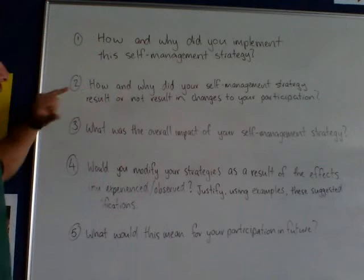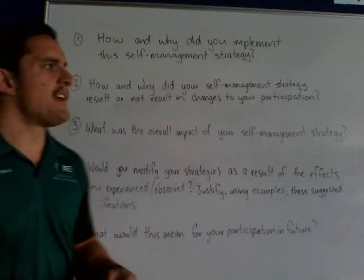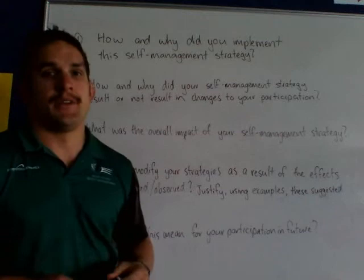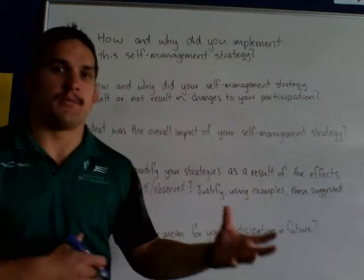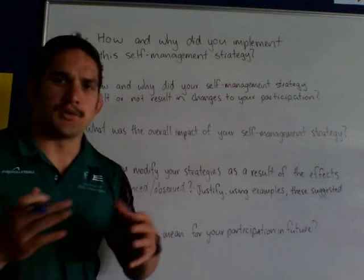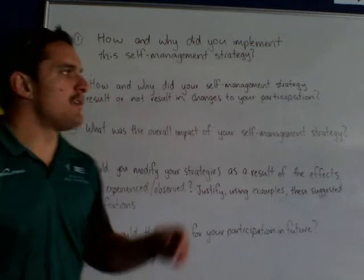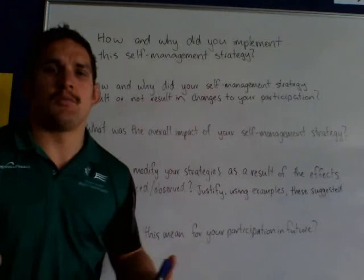And then you do that for your second strategy as well. Question two: how and why did your self-management strategy result or not result in changes to your participation? Think about your strategy — you might like to use your logs — and consider whether it actually increased, decreased, or kept things the same in terms of your participation. Did goal setting make you want to participate more? Did it make you want to participate less, or was it just the same? Whatever you write down, please make sure you justify why.